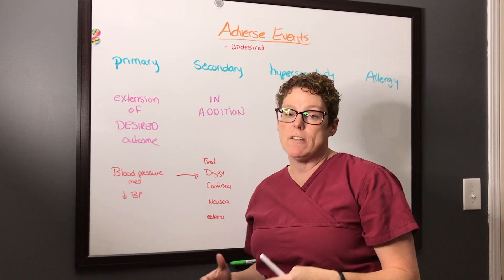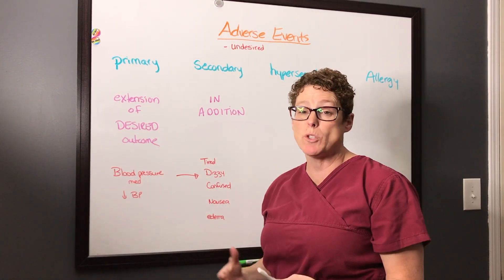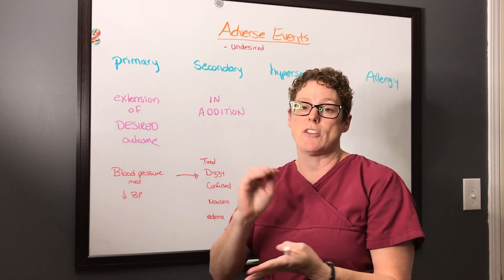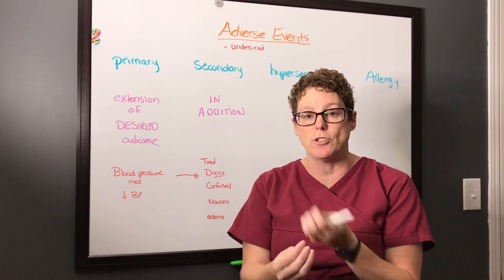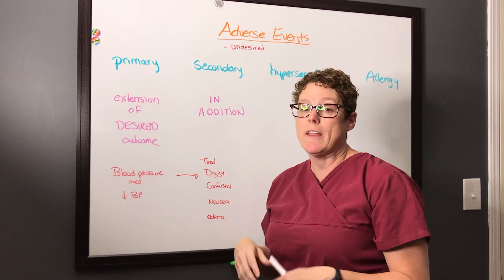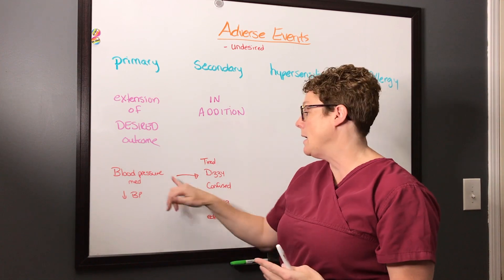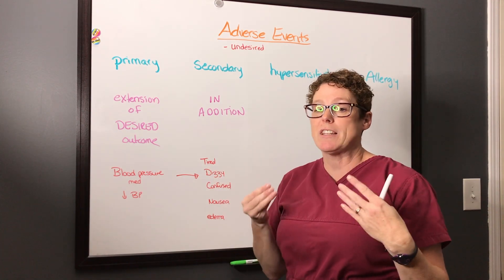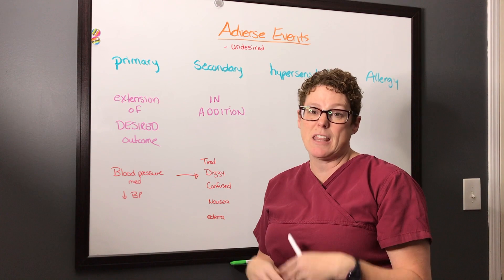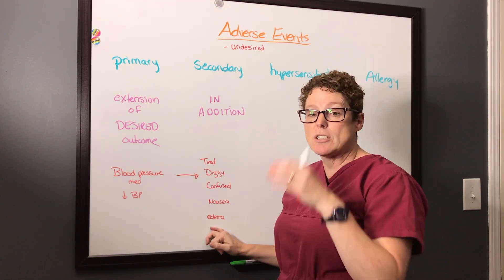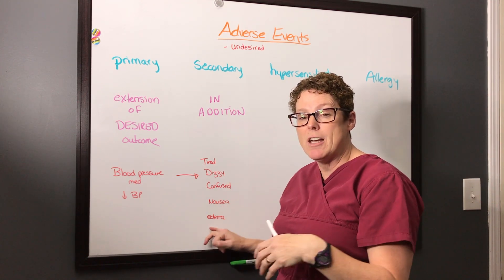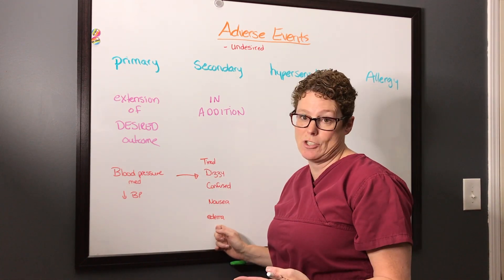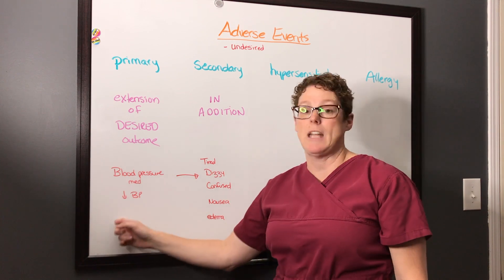When it comes to secondary effects, these are considered in addition to the desired effects. For that blood pressure medication, we tell them the medication acts on a specific site and the end result is to lower blood pressure, but we also need to tell them about other side effects — such as tiredness, dizziness, confusion if blood pressure gets too low, nausea from taking the pill orally, or edema if the heart slows down. These are not the desired intention but may happen as a result of achieving the desired outcome.